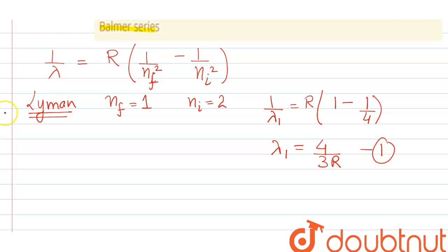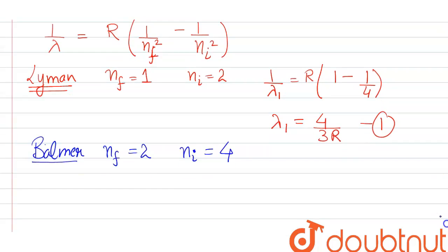Now for second equation, it is written the second line of Balmer series. For Balmer series we know nf should be 2, and for second line ni should be 4.